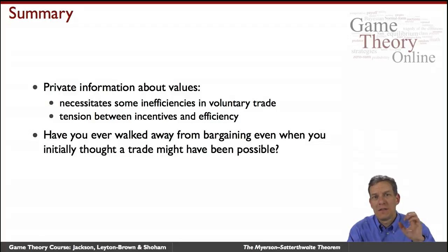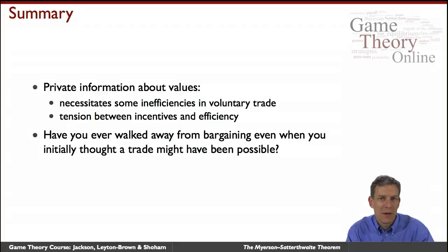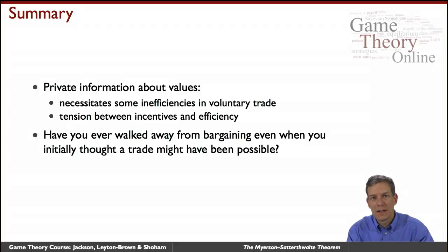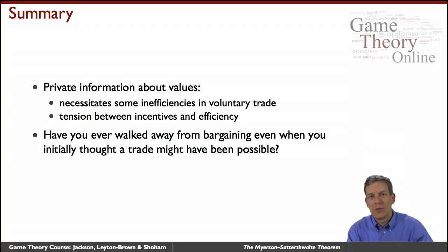This begins to explain why we have strikes, why we have breakdowns, why we don't always come to an agreement. Have you ever walked away from a bargain when you thought trade might really be possible? Sometimes we're forced to leave things on the table. Understanding this is important for understanding why some inefficiency exists in the world — to the extent that people have private information about their willingness to do something, that's going to be difficult to overcome in getting full efficiency.